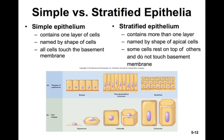Simple epithelium contains only one single layer of cells. They're named by the shape of their cells, and all cells touch the basement membrane. Stratified epithelium contains more than one layer — hence the name stratified — and is named by the shape of the apical cell.